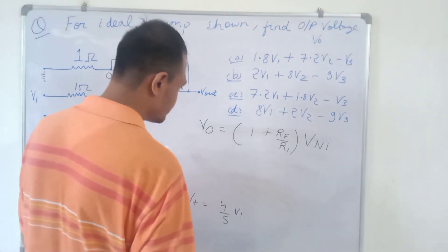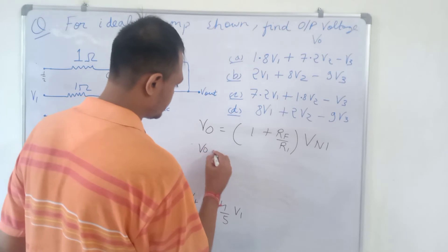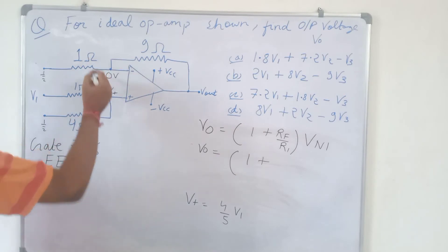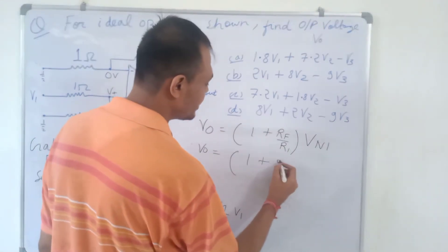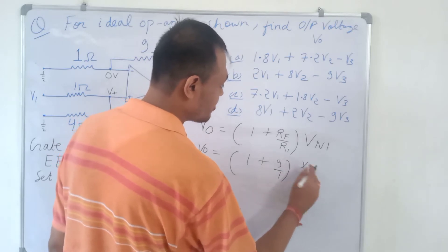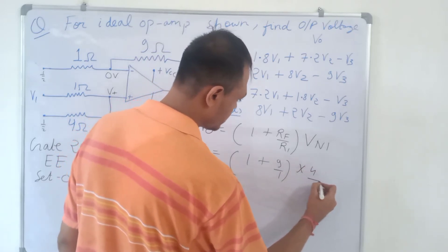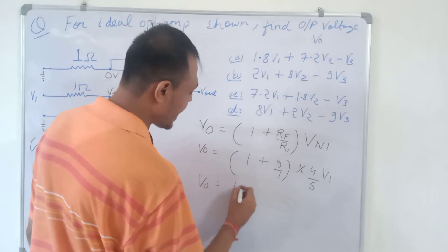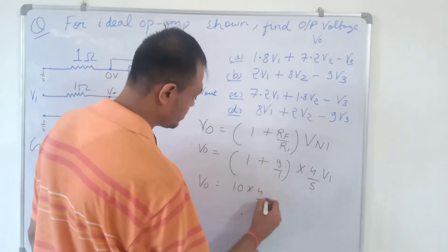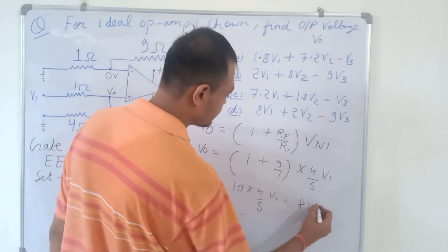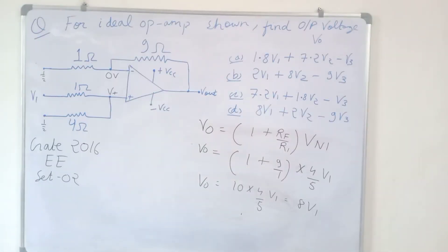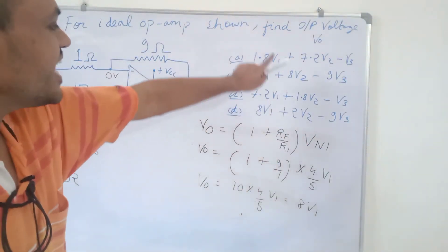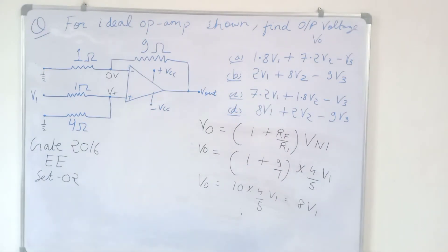Applying the non-inverting formula: V0 = (1 + Rf/R1) × V+ = (1 + 9/1) × (4/5)V1 = 10 × (4/5)V1 = 8V1. Using this result, we can already identify option D as correct since only option D has the coefficient 8 for V1. But we will verify for the other voltages as well.